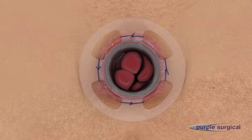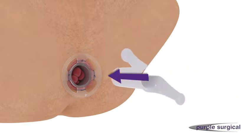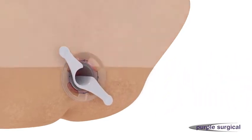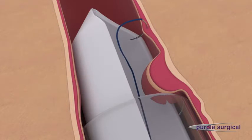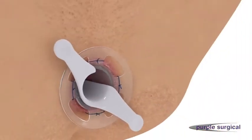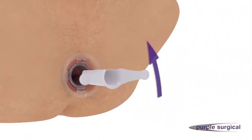Secure the clear anal dilator into place using the fixation sutures at the four cardinal points. Insert the purse string suture anoscope and rotate to complete a purse string suture around the entire anal circumference, only including the mucosa and submucosa that protrudes through the purse string suture anoscope window. After each suture, ensure the purse string suture anoscope is removed, rotated, and then reinserted.